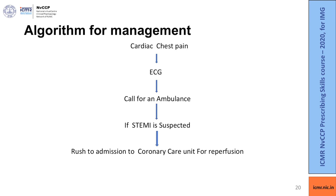Coming to the overall algorithm for management of cardiac chest pain: when a cardiac chest pain patient approaches you, immediately perform an ECG and simultaneously call for an ambulance. If you are suspecting ST elevation MI, rush the patient immediately for admission to the coronary care unit for reperfusion.